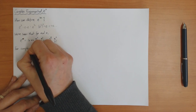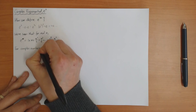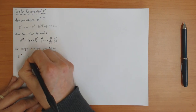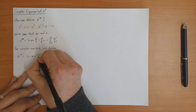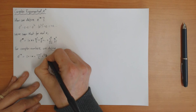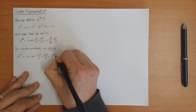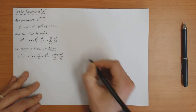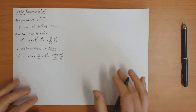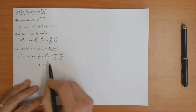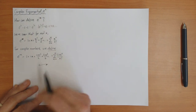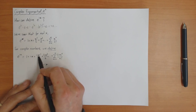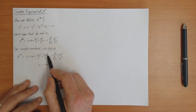For complex numbers, we define e to the ix as equal to 1 plus ix plus ix squared over 2 plus ix cubed over 6, and so on — which is the sum from n equals 0 to infinity. So we need to work out exactly what this number is. It's going to have a real part and an imaginary part. For example, the term 1 is real, ix is imaginary, then ix squared equals minus x squared, which is again real. So this term is real and the next is imaginary.